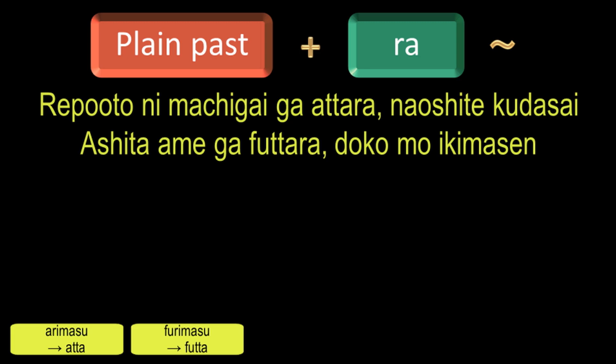By now, I think all of you would have learnt that when mo comes immediately after an interrogative in a negative sentence, it implies a complete negative. For example, Nani mo arimasen means nothing is there; Dare mo imasen means nobody is there; Doko mo ikimasen means I will not go anywhere, and so on.